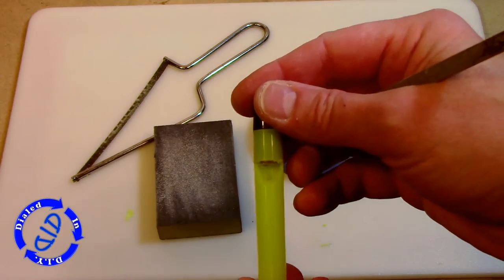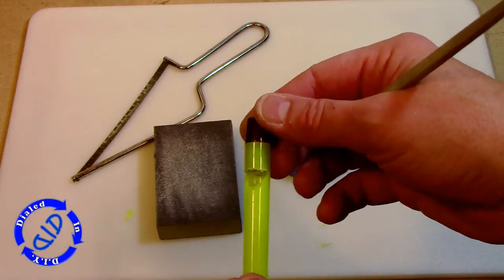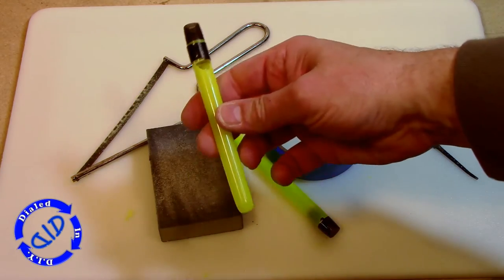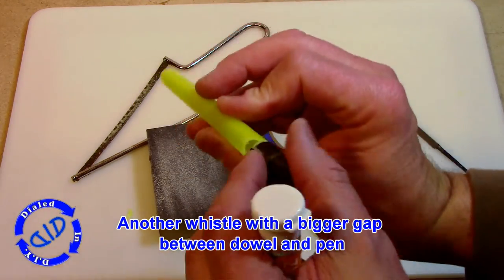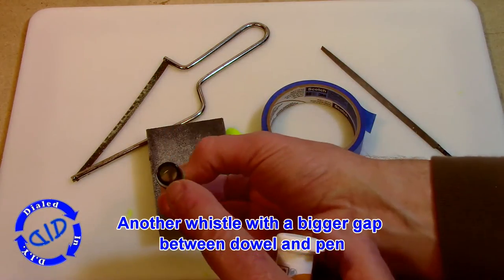There are several things you can do to adjust the pitch and volume when making whistles. Try shortening the barrel, making a bigger flat edge on the dowel, try different highlighters and different pens.